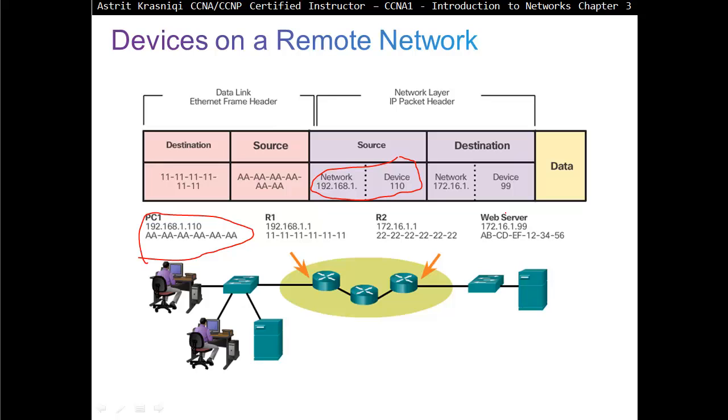Now, because this PC finds out that it knows that this web server is not on the local network. The source is obviously going to be himself, that's the source MAC address. But the destination MAC address is not going to put the web server's destination MAC address. It's going to ARP or send address resolution protocol for the default gateway, which in this case is 1111. That's the default gateway MAC address.